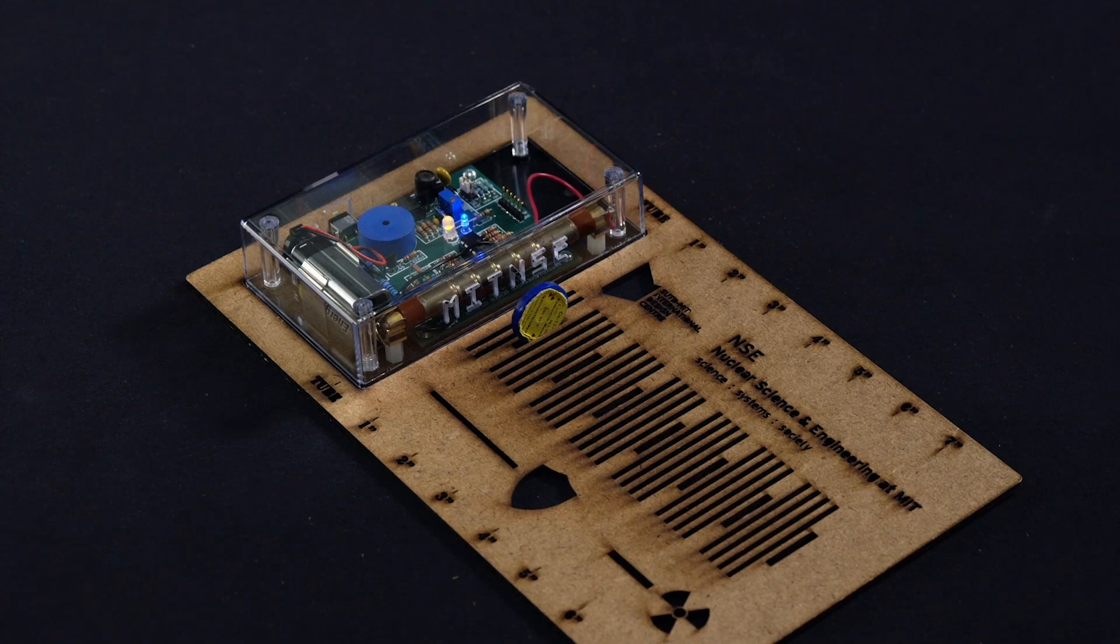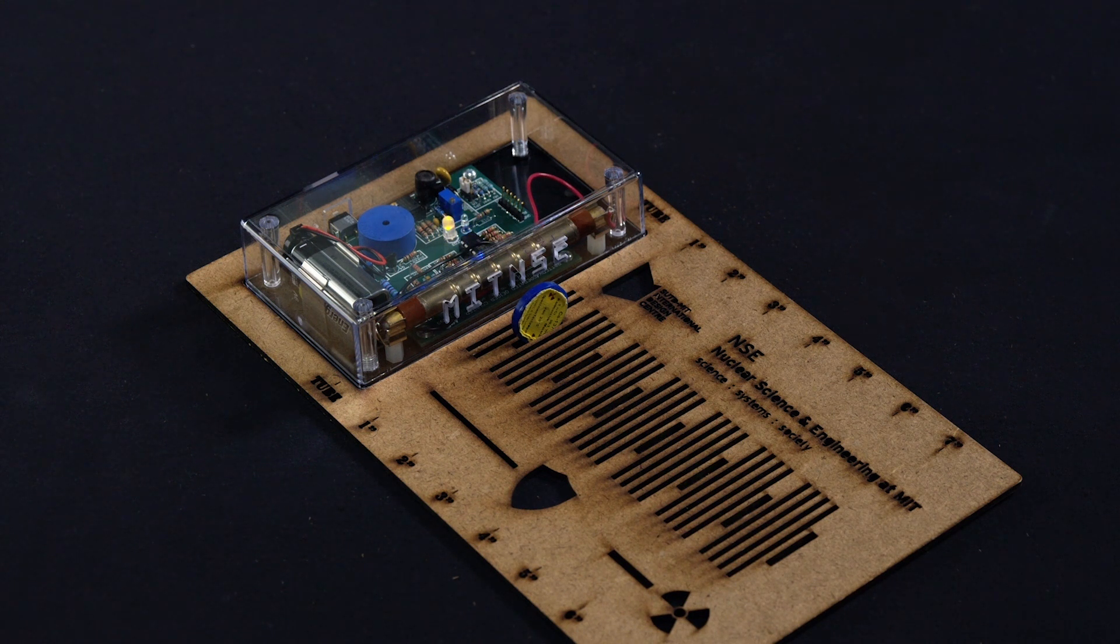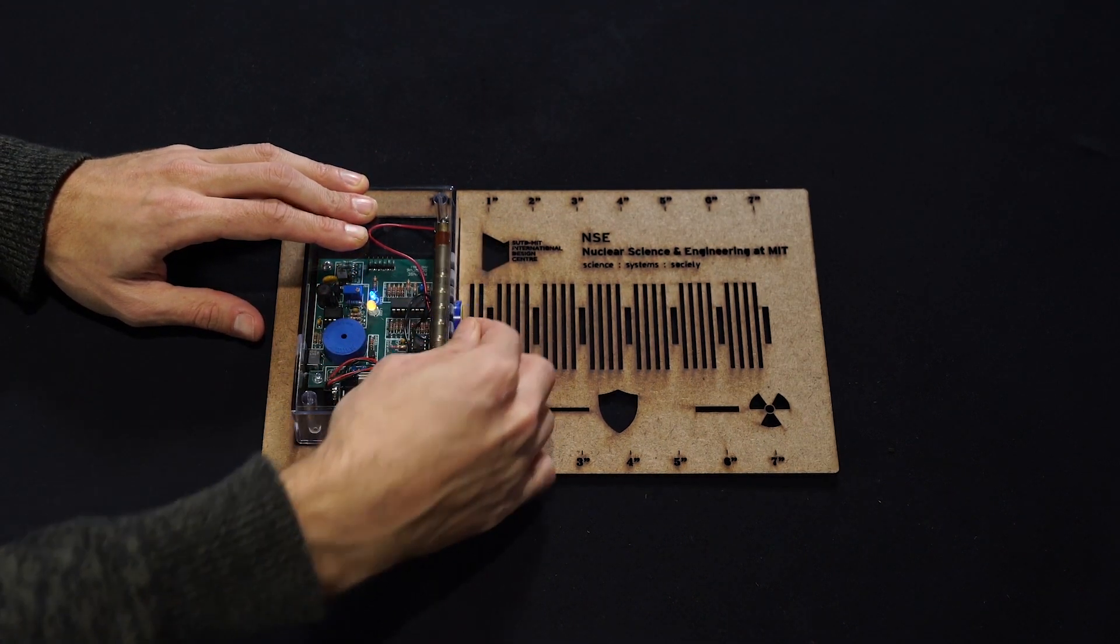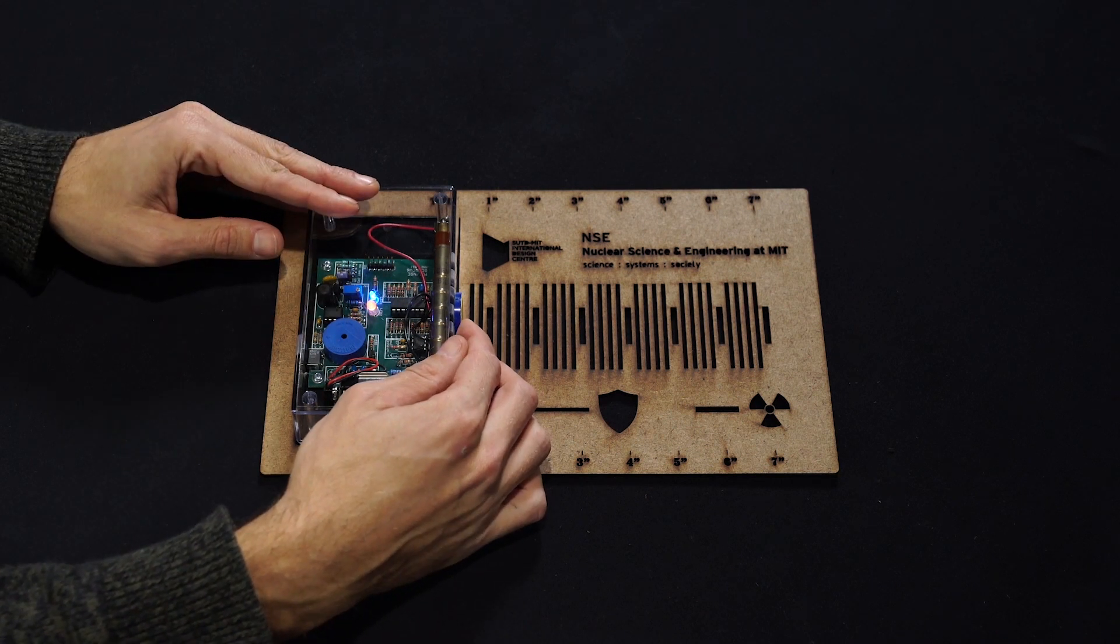Notice the stark difference that we have here. As we bring this check source closer to the Geiger counter, you hear clicks going on all the time. That's because this is a radioactive piece of material. Unlike the light bulb, whose photons are too low energy to cause ionizations, this little coin emits ionizing radiation all the time. And the closer you bring it to the tube, the more intense the clicking gets.